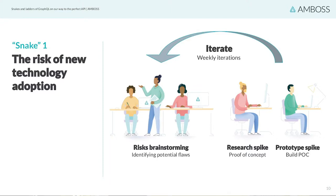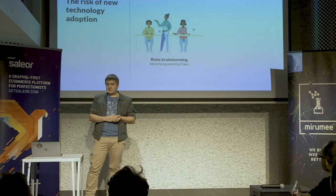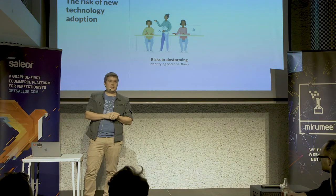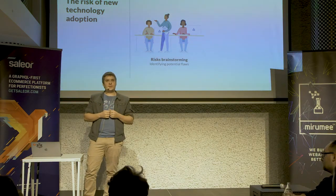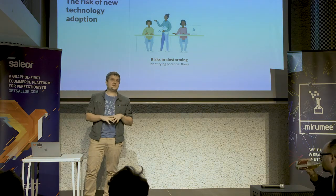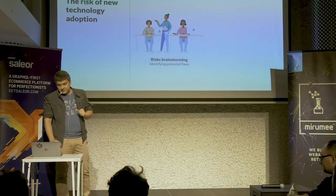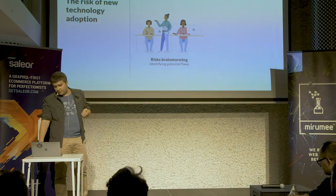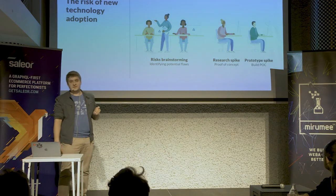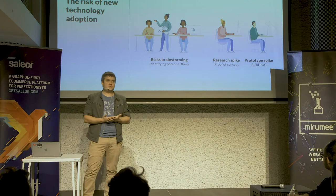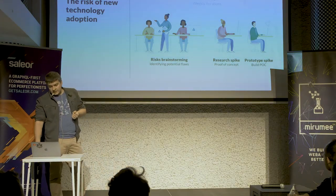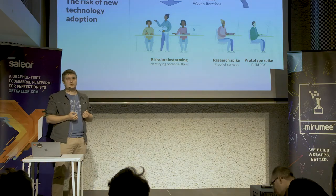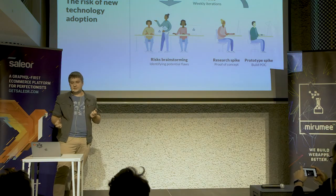Our approach was to hold regular meetings brainstorming potential flaws of the technology. We had two technology advocates and two more pessimistic colleagues who tried to find any disadvantages by reading online and so on. After these brainstorming sessions, we went to our developer room and tried to build a proof of concept, either proving that a flaw would not affect us or that there was an actual solution for the problem. It was iterative — we spent about four weeks going back and forth, and I think it was totally worth it because we were able to observe all major risks and were prepared for them.